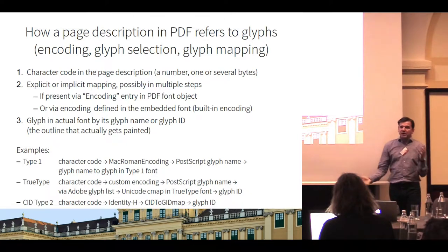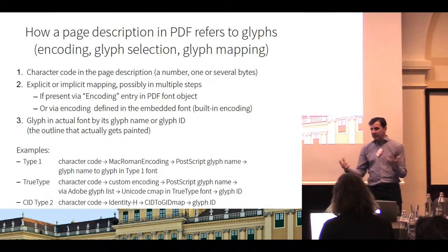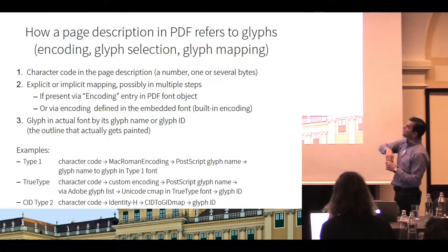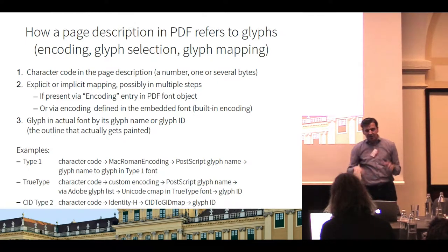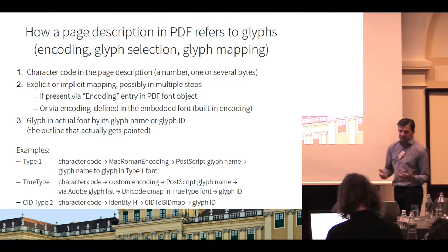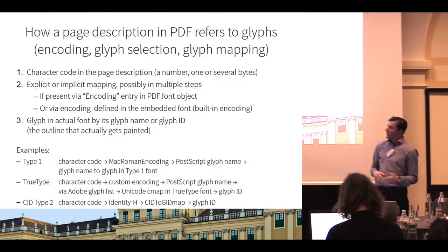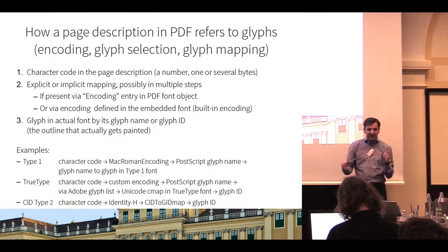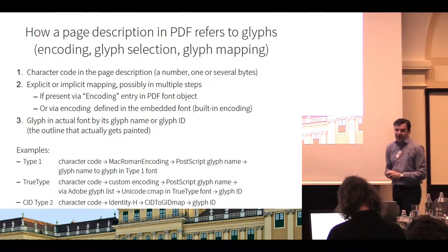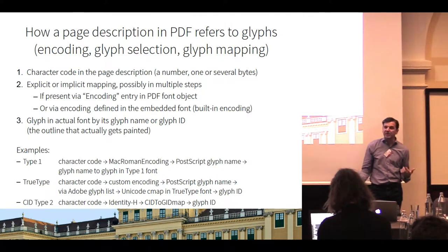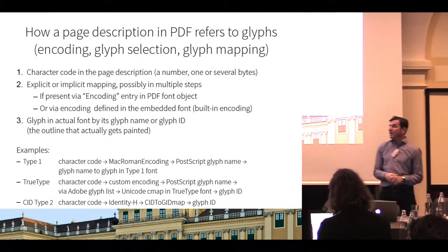What happens if you have in your page a code for a character? What does the viewer need to do to derive from that code the actual glyph? There is a character code in the page description — just a number, it could be one byte or two bytes. Then you have a mapping from this code to the glyph ID in the font. This way from the character code to the glyph ID is called the encoding, glyph selection, or glyph mapping — there are several names for this rather complex procedure.